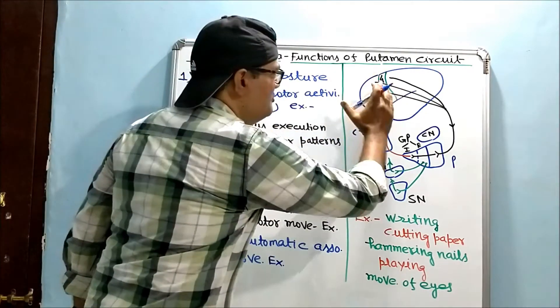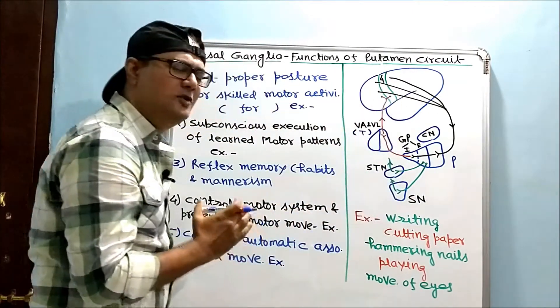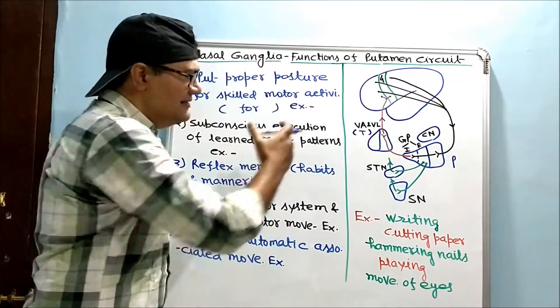So although no fiber arises from area number four, primary motor cortex, the majority of output fibers go to area number four. This is a loop connection.